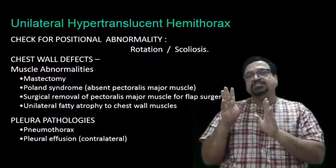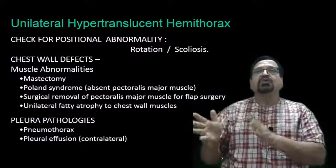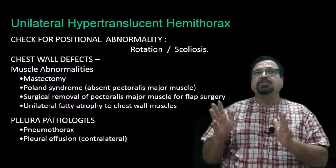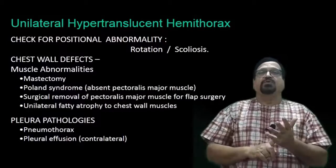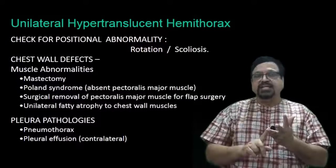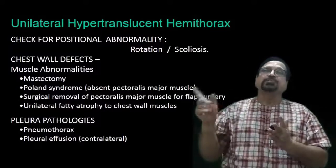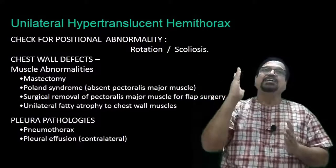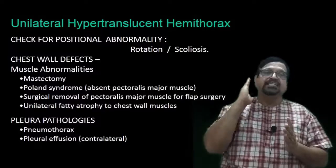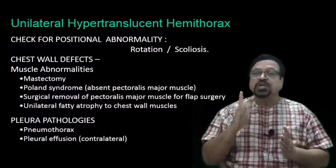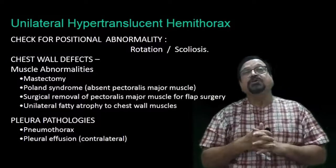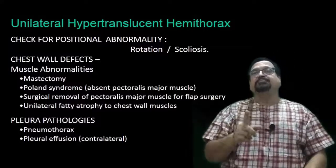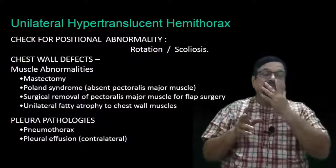Unilateral hyperlucency - that is a lung which looks black on one side. Obviously the causes of hyperlucency have to be checked. You will also have to check for scoliosis, rotation, and tube tilt - when the X-ray tube is tilted you will get one side white (underexposed) and one side overexposed. These are technical factors that are very important before you conclude that there is unilateral hyperlucency of a hemithorax.